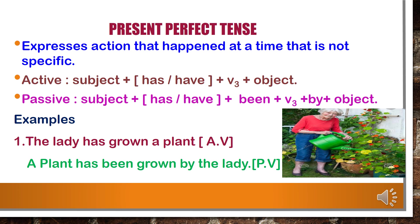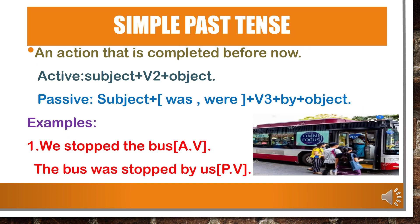For present perfect tense: he has, she has, it has, we have, you have, they have. Example — in active voice: 'The lady has grown a plant.' In passive voice: 'A plant has been grown by the lady.' 'A plant' is the object in active voice and now becomes the subject. 'Has' is the helping verb. 'Being' is written as it is. V3 form 'grown' remains unchanged. 'By' is written before the object. 'The lady' becomes the object in passive voice.